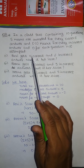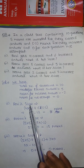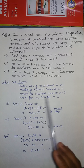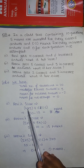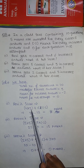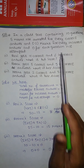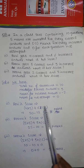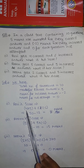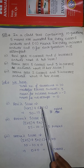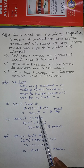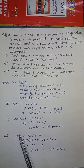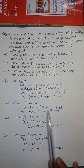First, Ravi's score: he gave 4 correct answers. For 4 correct answers, that is 4 into 5. For 6 incorrect answers, that is 6 into minus 2. So 4 into 5 is 20, and 6 into minus 2 is minus 12. Therefore, 20 minus 12 is 8. Ravi will get 8 marks.